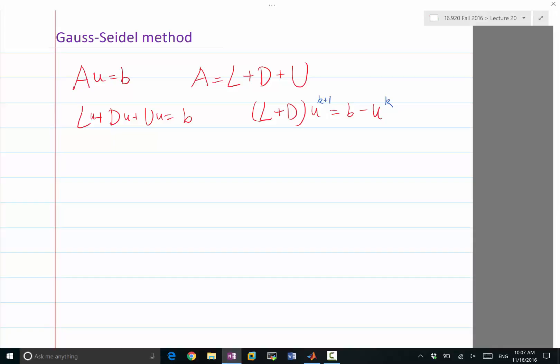Why is inverting D only easy? It's diagonal, right? The inversion of D can be computed explicitly. It's just another diagonal matrix with the reciprocal of the diagonal entries of D.